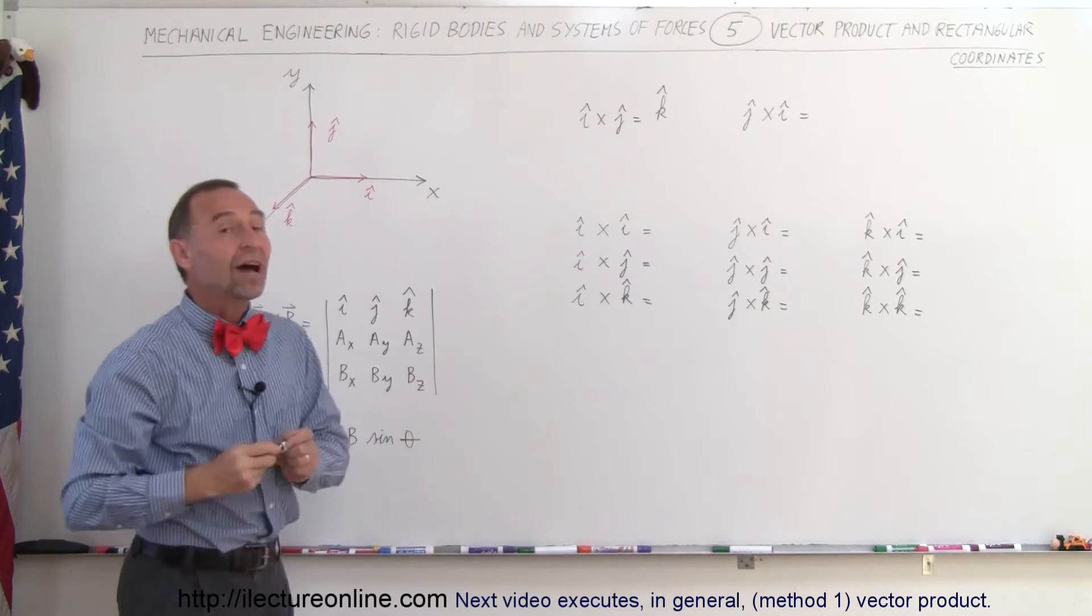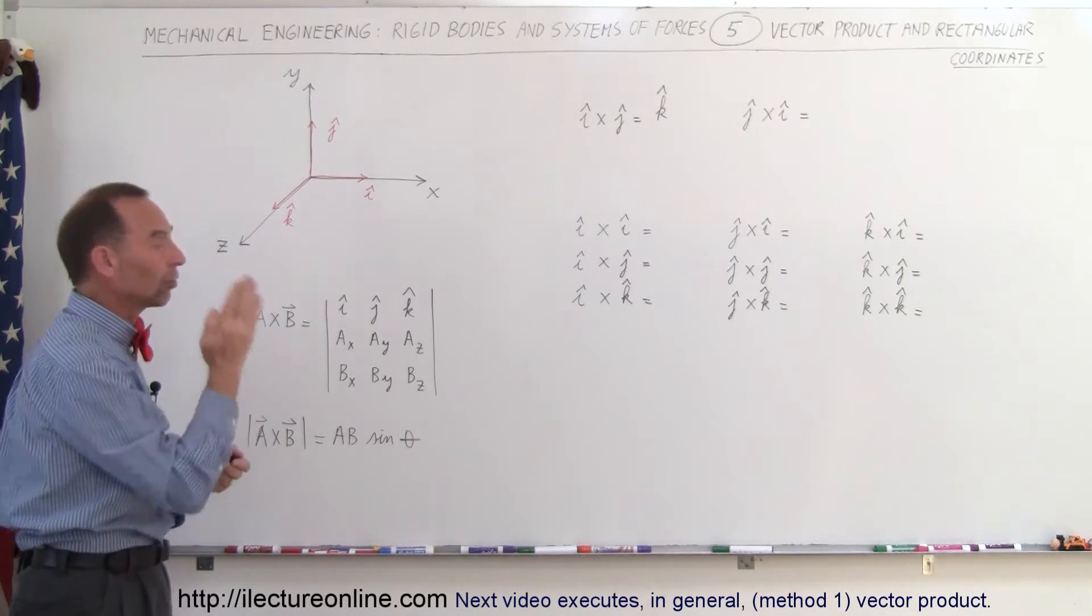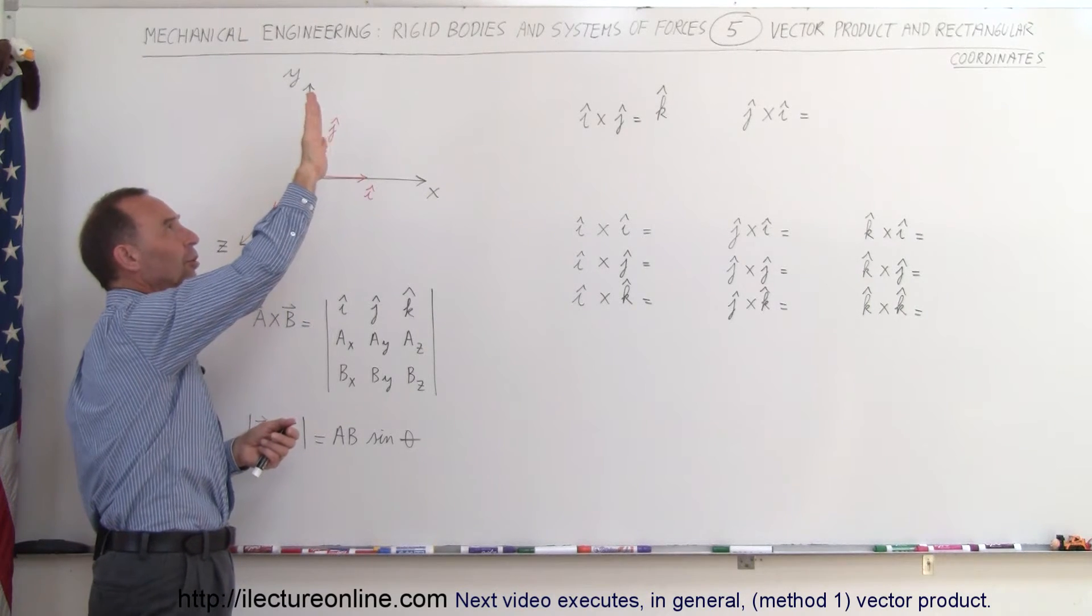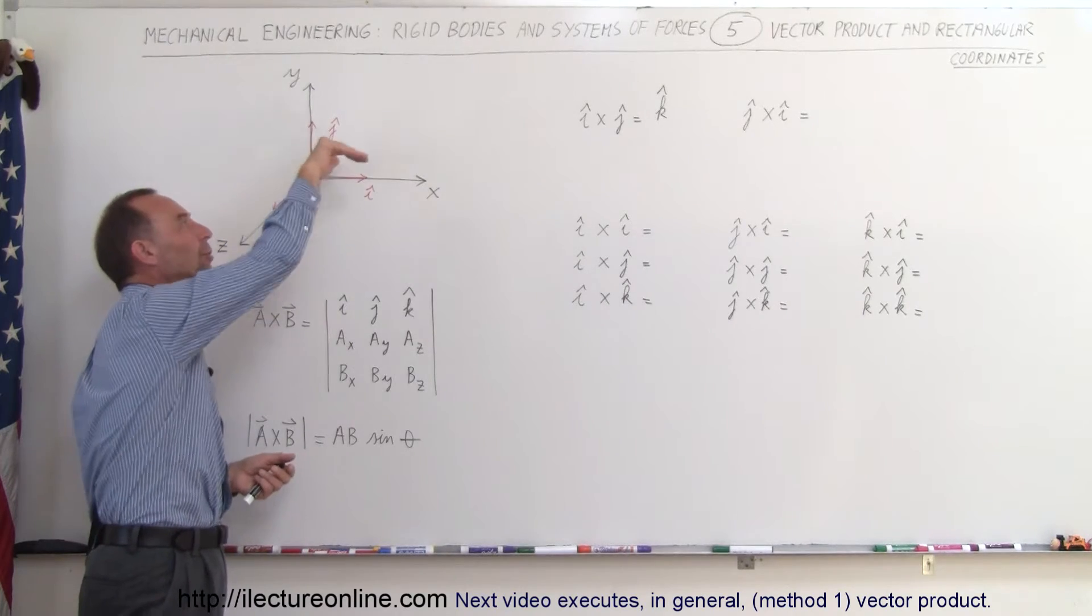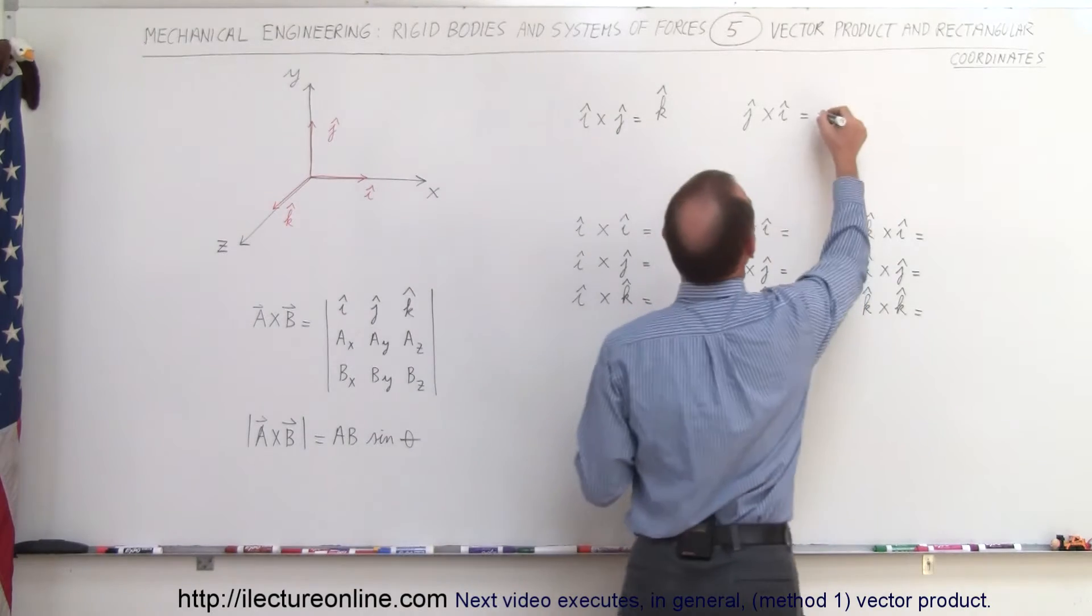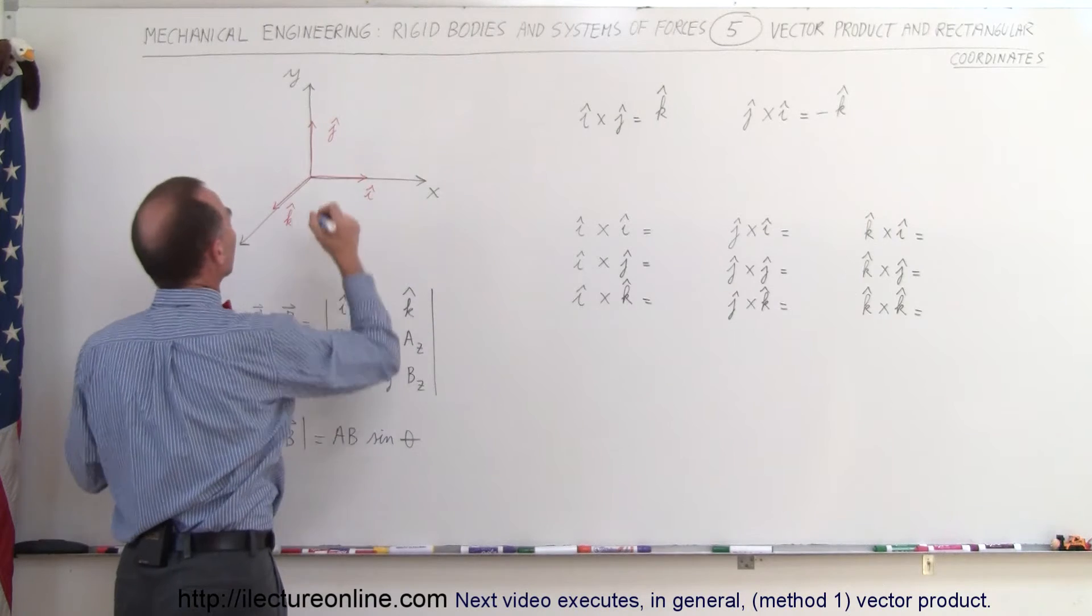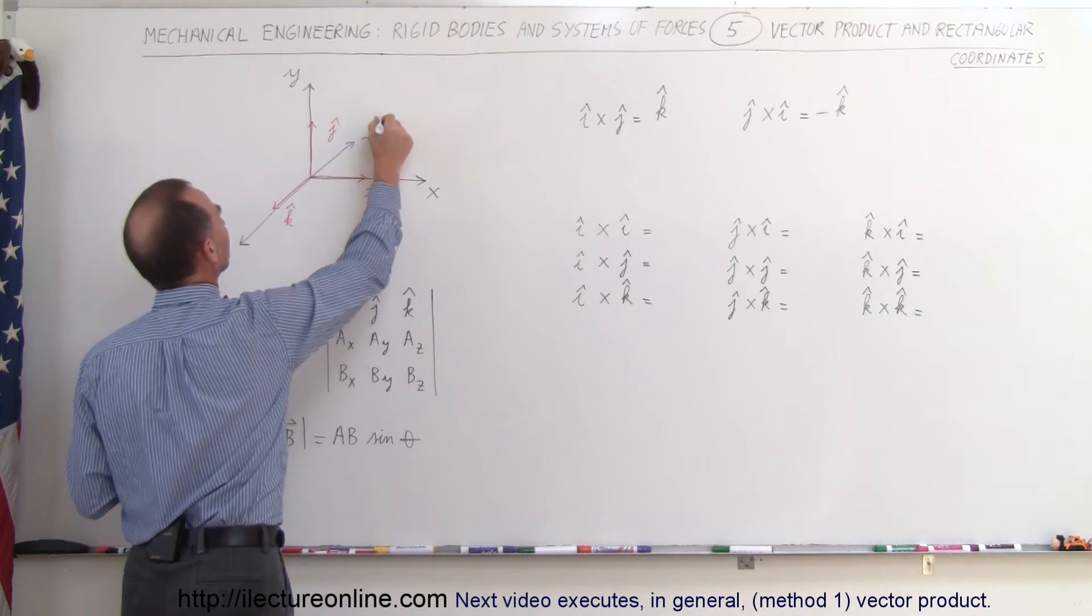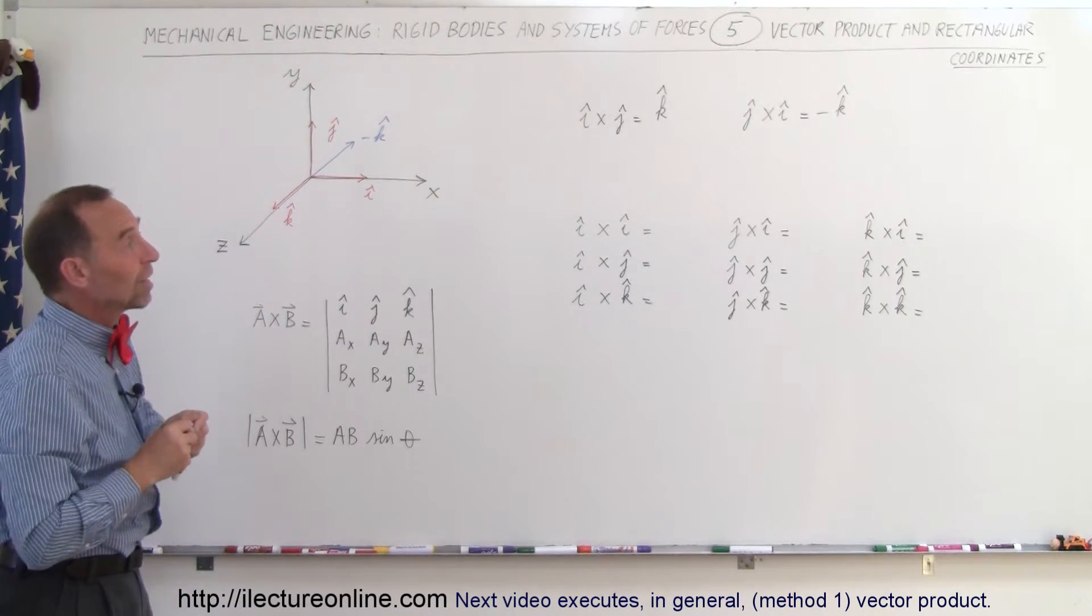Now what about if we do J cross I? We already know that if we do the reverse cross product, we should get the negative answer. So using the right-hand rule, point your fingers in the direction of the J vector, curl your fingers in the direction of the I vector, and notice your thumb now points into the board. That's the negative Z direction, so therefore we get minus K and that will be in the opposite direction. So here would be the vector minus K and that would be the result of doing the cross product J cross I.